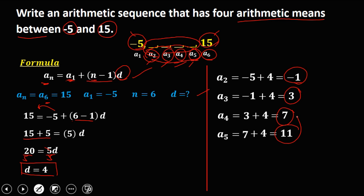So these are the 4 arithmetic means between negative 5 and 15: negative 1, 3, 7, and 11.